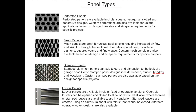Stamped aluminum panels can add texture and dimension to the look of an overhead sectional door. Examples of stamped panel designs include beaded, stucco, and wood grain. Custom stamp panels are also available. Louver panels can be used as either fixed or operable. Operable louvers can be opened and closed to allow or restrict ventilation, whereas fixed or stamped louvers help with ventilation. Stamp louvers are created using an aluminum sheet with slots that cannot be closed. Consult with your overhead door manufacturer to see your options for incorporating panel designs.